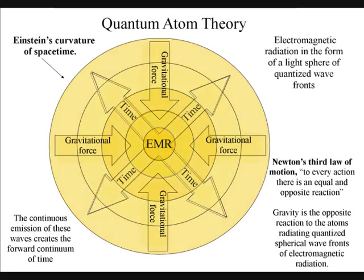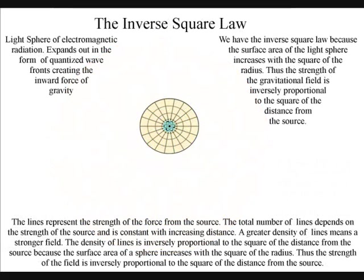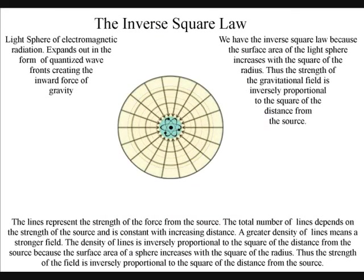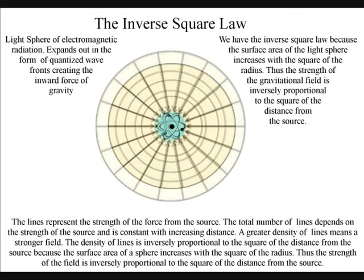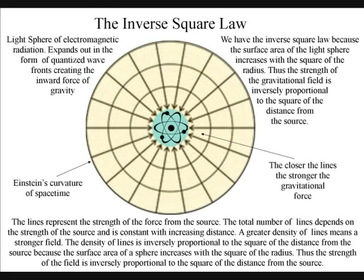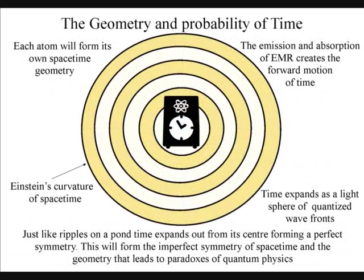We have the inverse square law, because the surface area of the light sphere increases with the square of the radius. Thus the strength of the gravitational field is inversely proportional to the square of the distance from the source. The symmetry and geometry of light forming the curvature of space-time is the key to understanding the reality of quantum mechanics.